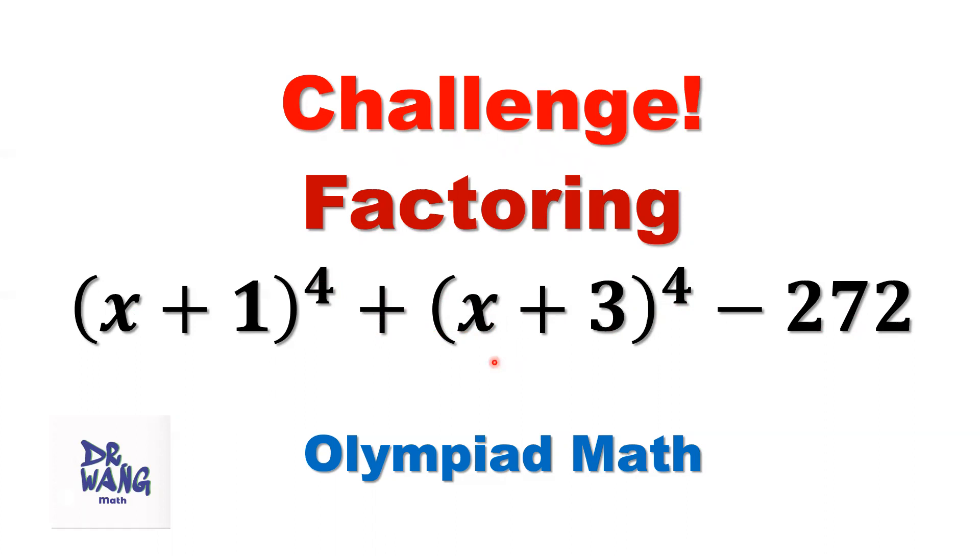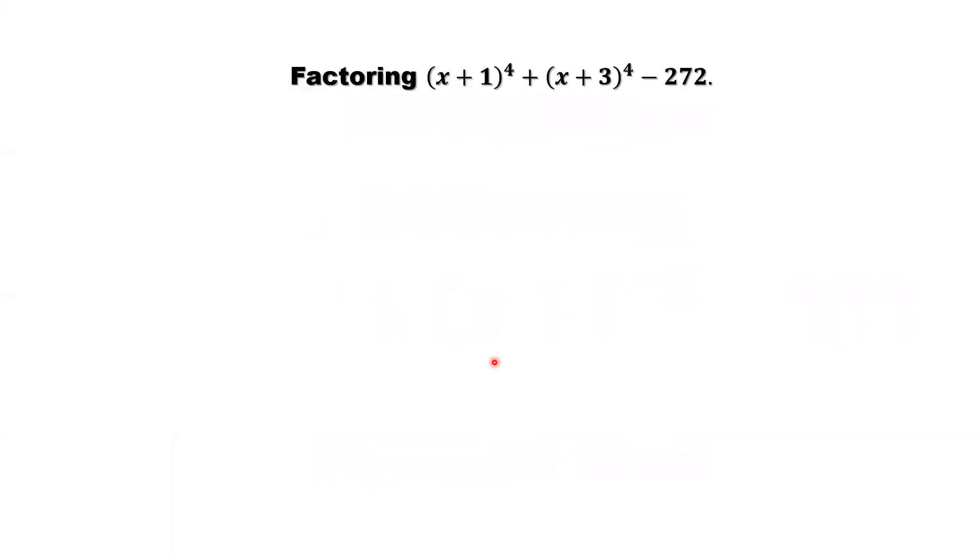So here we are going to use a different method, which is a shortcut. You will see why this method is good. Here look at x+1, x+3. We have a number in between. We can see that's the average of the two numbers, which is x+2. x+2, comparing with x+1, this one is just one number less. x+3 is just one number more. This is a typical method in algebra to simplify expressions to find the solutions or factor.